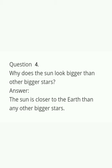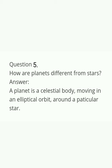Question four: Why does the sun look bigger than other stars? Answer: The sun is closer to the Earth than any other star, so the sun looks bigger to us. Question five: How are planets different from stars? A planet is a celestial body moving in an elliptical orbit around a particular star.